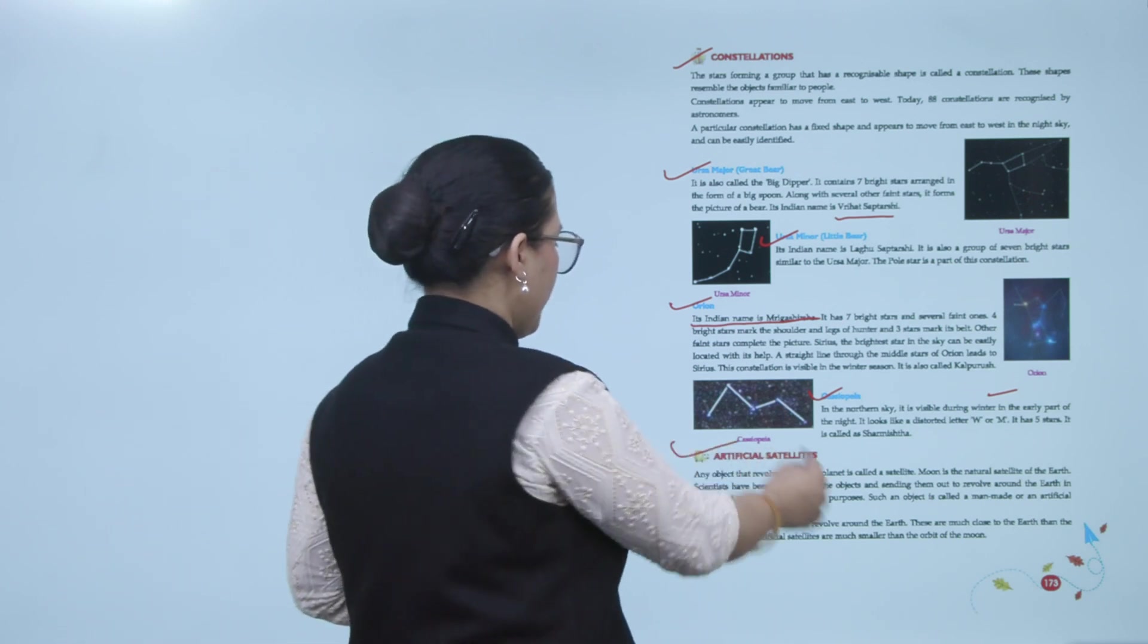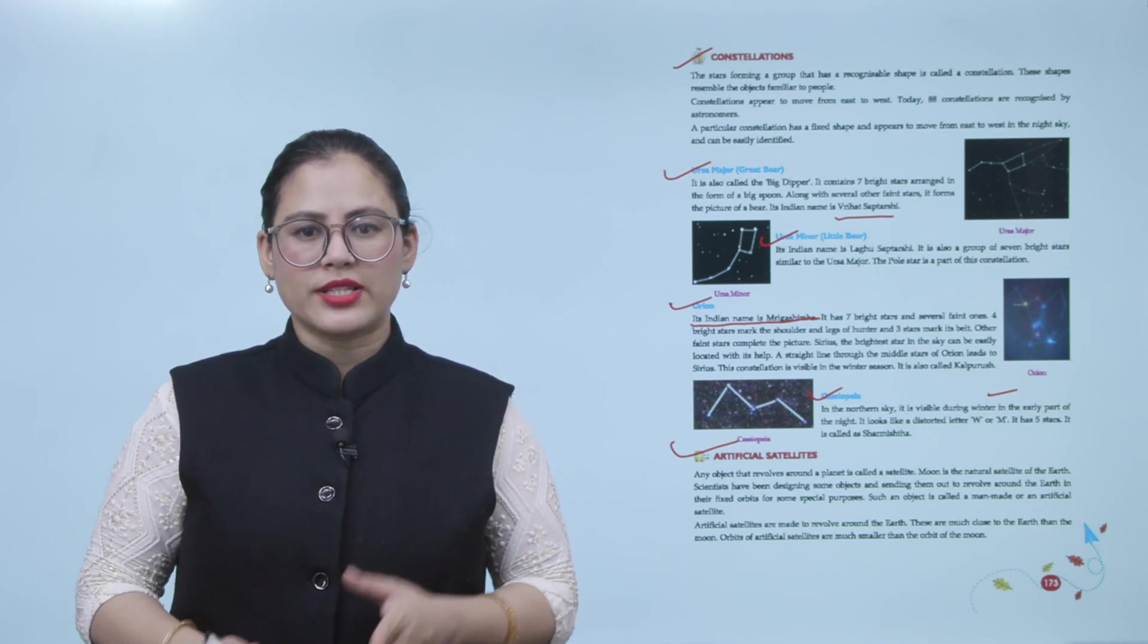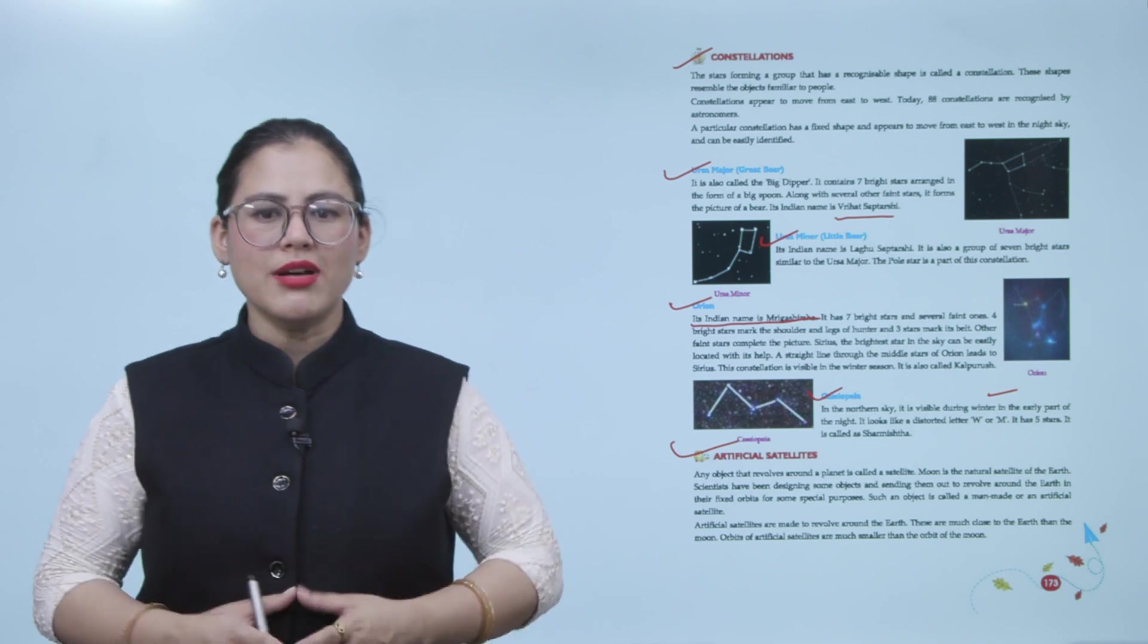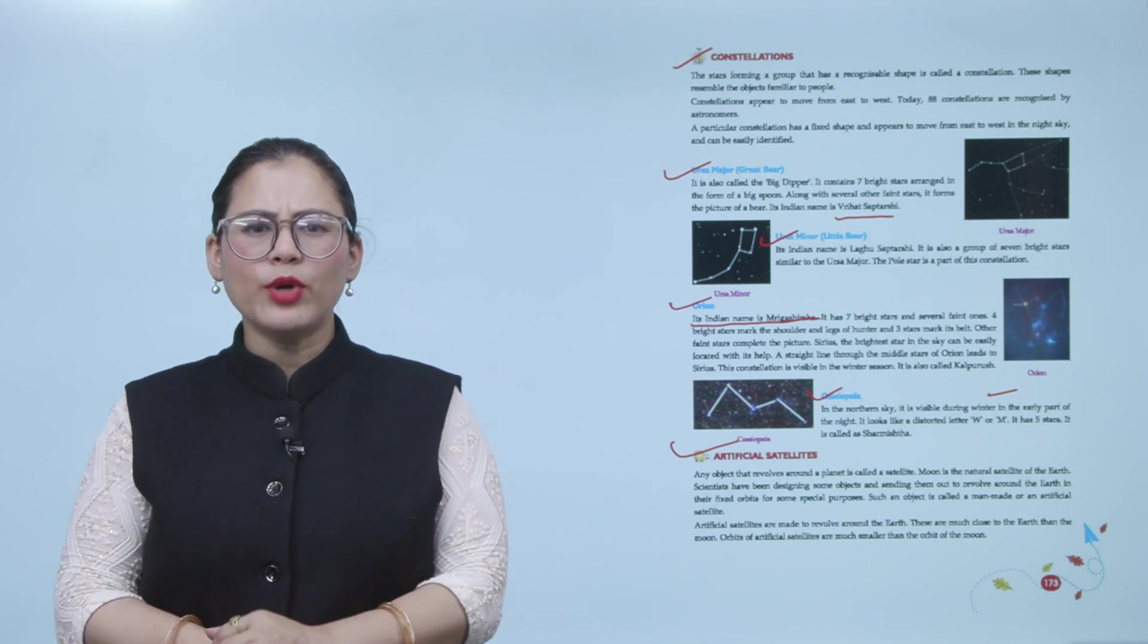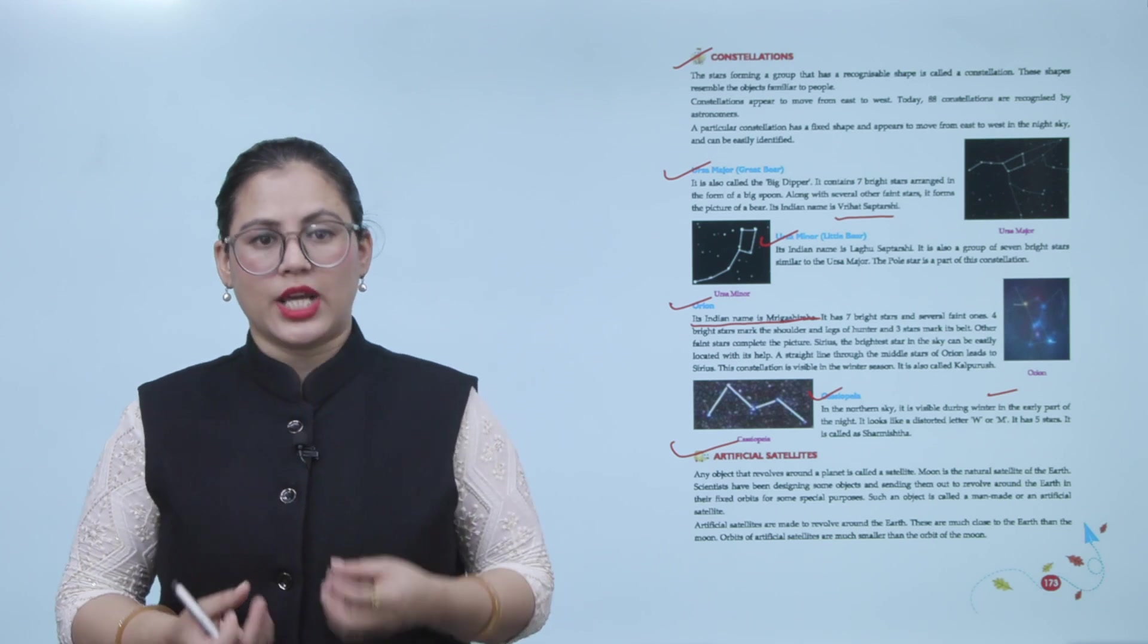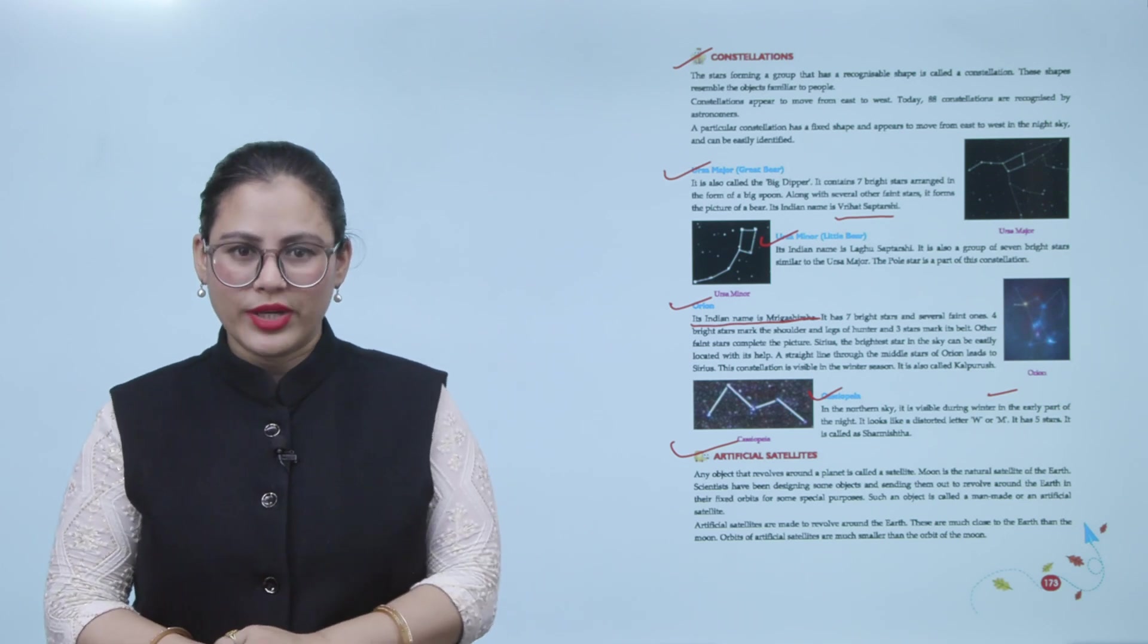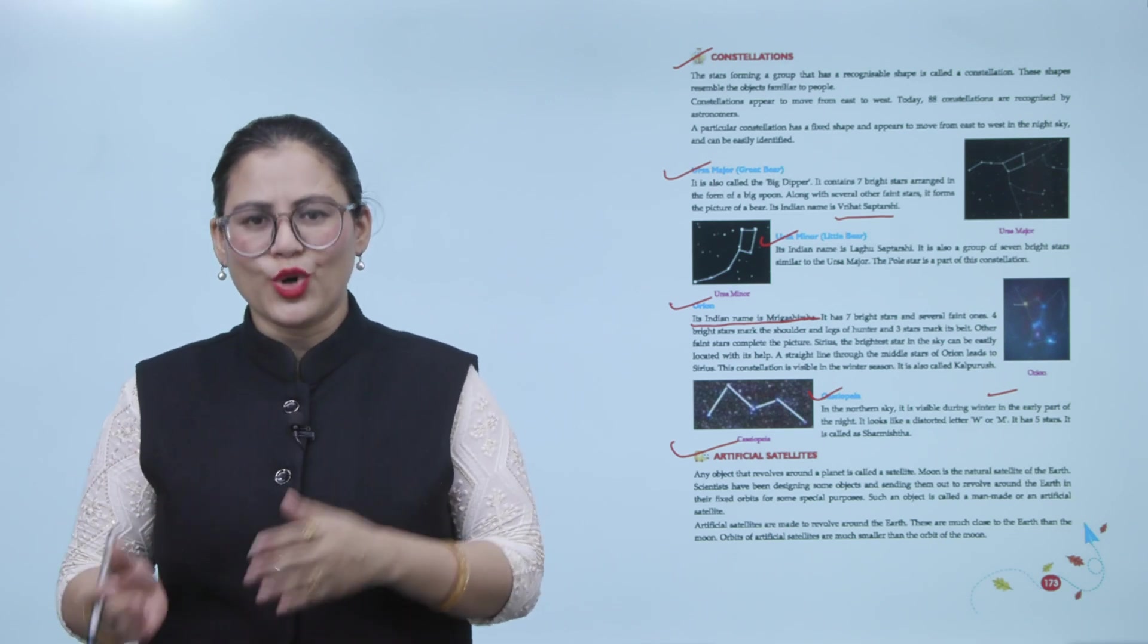Artificial satellites. Any object that revolves around the planet is called a satellite. Moon is a natural satellite of the earth. Scientists have been designing some objects and sending them out to revolve around the earth in their fixed orbits for some special purposes. Such an object is called a man-made or an artificial satellite. Artificial satellites are made to revolve around the earth. These are much closer to the earth than the moon. Orbits of artificial satellites are much smaller than the orbit of the moon. Any object that revolves around a planet is called a satellite. Moon is a natural satellite, but some objects have been designed by scientists and sent to revolve around the earth in fixed orbits for special purposes. These are closer to the earth compared to the moon, and the orbits of artificial satellites are smaller than the moon's orbit.